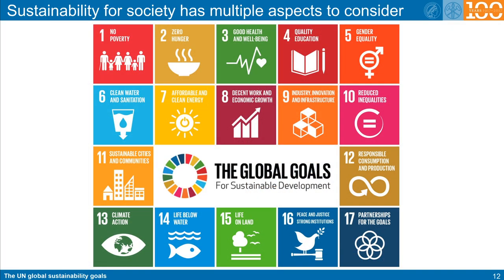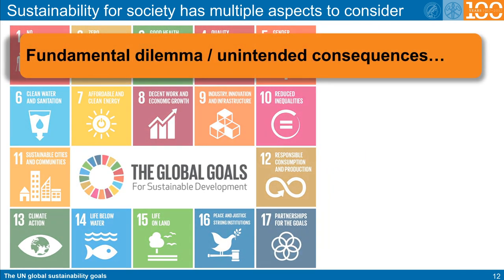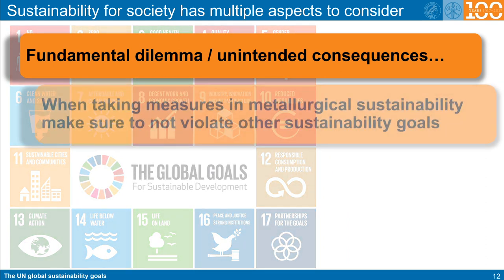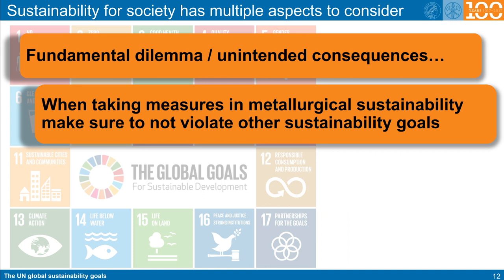This overview of the sustainability goals for society and industry, defined by the United Nations, shows that the implementation of sustainability measures has multiple aspects to consider. In this lecture series we will mainly discuss aspects related to metallurgical industry, responsible production, and technologies for sustainable cities. However, the UN targets for sustainability reach much beyond that, including poverty, labor, human rights, hunger, health, and education. This means that we may run into a fundamental dilemma when unintended consequences arise that improve one of these goals but violate another. The take-home message is that measures in metallurgical sustainability should not violate other sustainability goals.